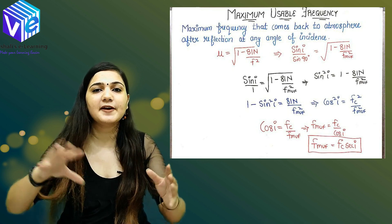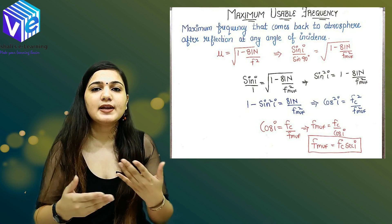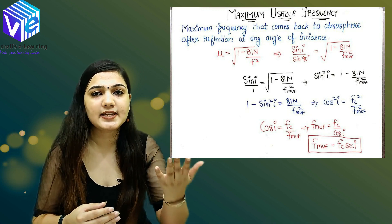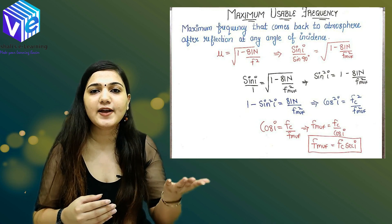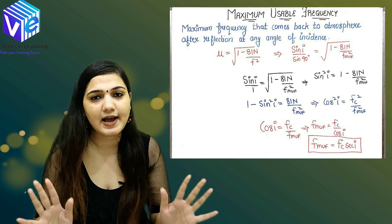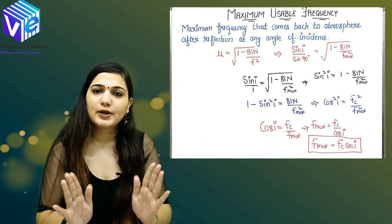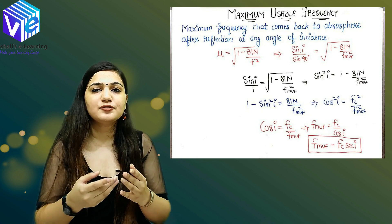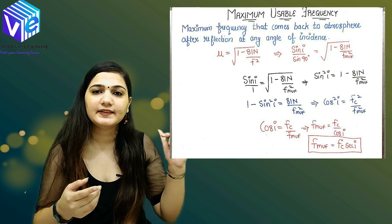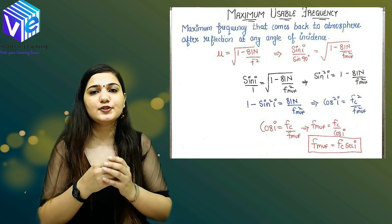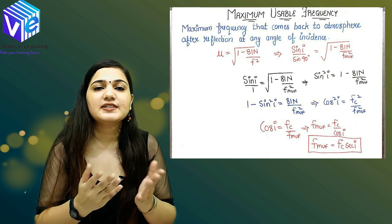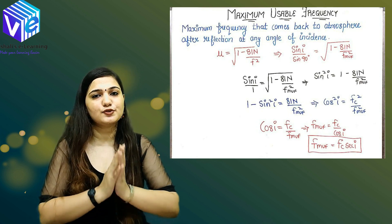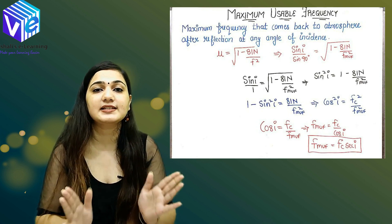Rearranging: 1 minus sin squared(I) equals cos squared(I), so cos squared(I) equals Fc squared upon FMUF squared. Taking the square root of both sides: Fc upon FMUF equals cos(I). Solving for FMUF gives us: FMUF equals Fc times secant(I).